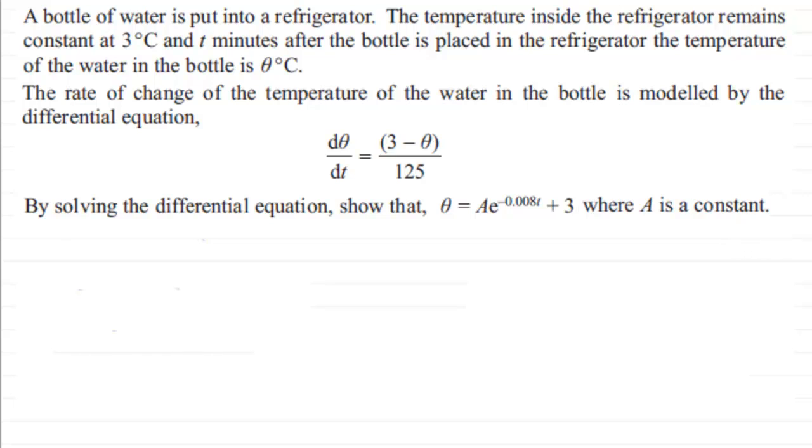Okay, welcome back if you had a go. Let's just check that we've understood the question first of all. We've got this bottle of water, it's put into a refrigerator, and we're told that the temperature inside the refrigerator remains constant at 3 degrees C. And t minutes after the bottle is placed in the refrigerator, the temperature of the water in the bottle is theta degrees C.